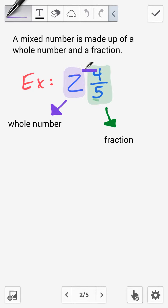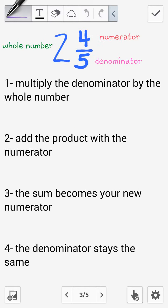Here in the example that we have, we have 2 and 4 fifths. The 2 is the whole number and the 4 fifths part is the fraction. Now these are the steps that we need to take in order to convert the mixed numbers into improper fractions.